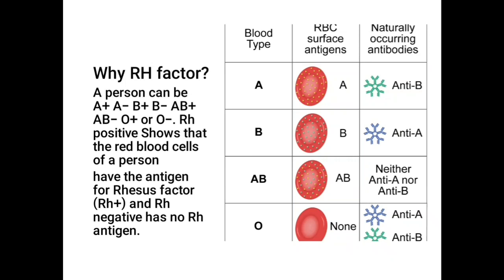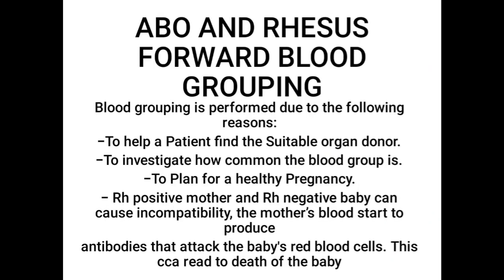In this lecture we're going to talk about blood grouping, specifically forward blood grouping. Forward blood grouping is the method used to identify the blood group of a person. There are two types of blood grouping: forward blood grouping and reverse blood grouping. Forward blood grouping uses antisera — Antiserum A, Antiserum B, and Antiserum D.